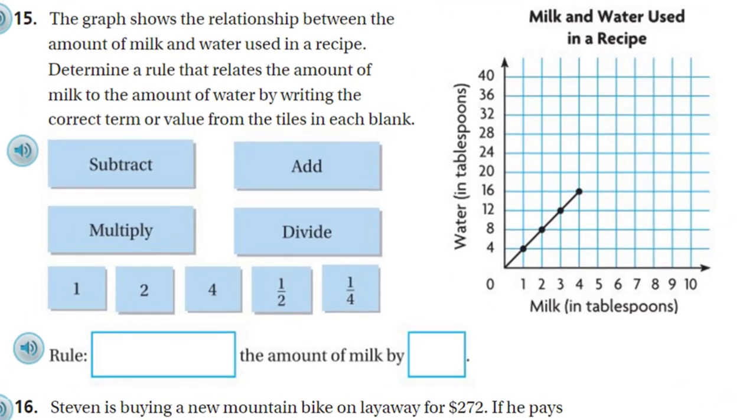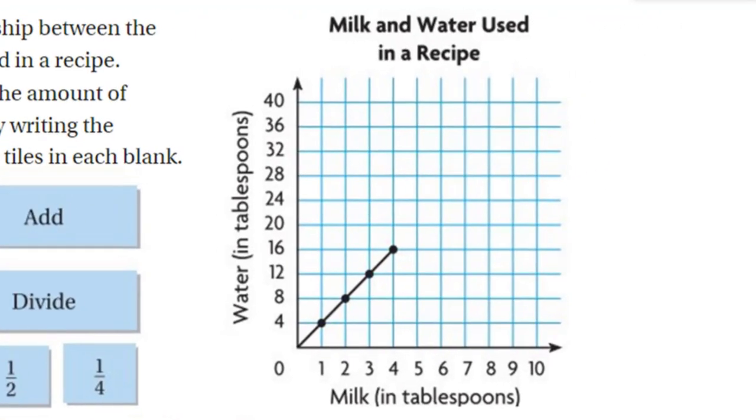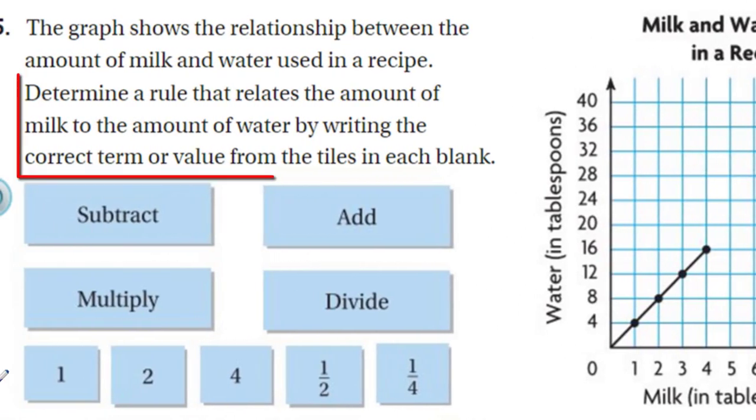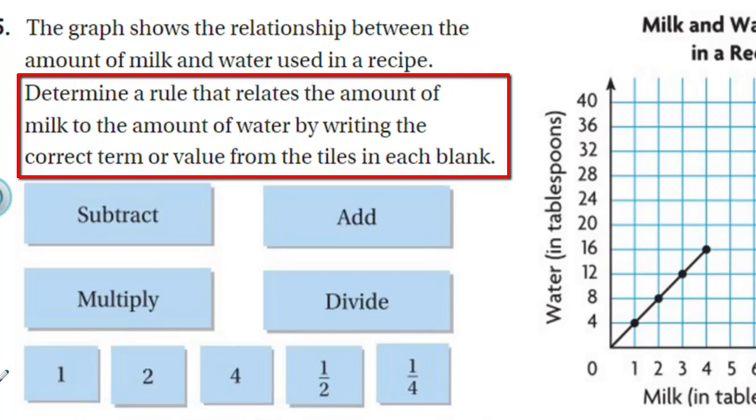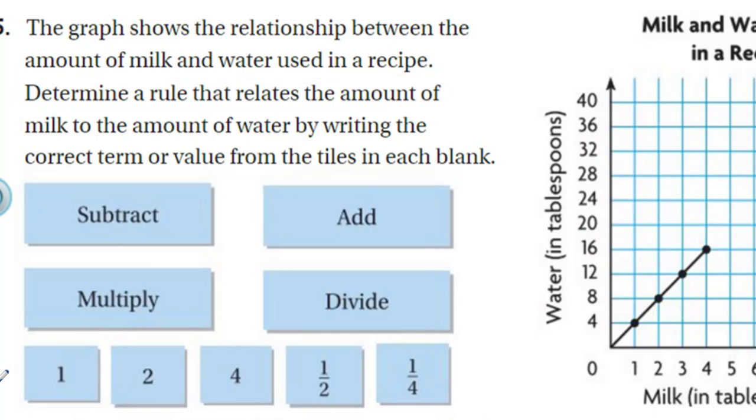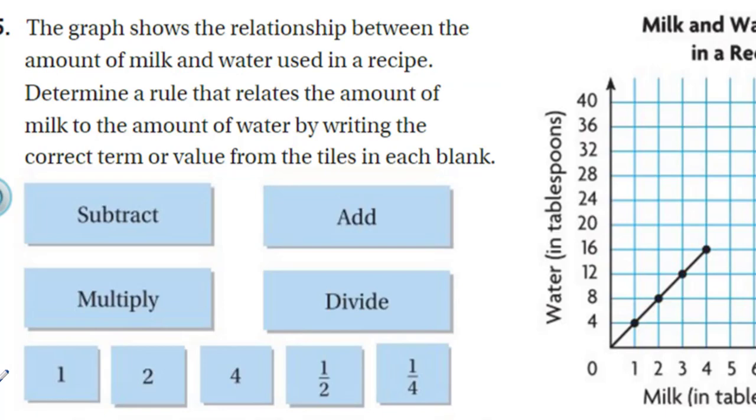Fifteen. The graph shows the relationship between the amount of milk and water used in a recipe. Determine a rule that relates the amount of milk to the amount of water by writing the correct term or value from the tiles in each blank. What in the world are we supposed to do here? Just kidding. Okay. Let's unpack this problem a bit slower. We have a graph over there. It does show a relationship between the milk and water. Milk in tablespoons. Water in tablespoons. Where you have one tablespoon of milk, you have four tablespoons of water. That's this little recipe.